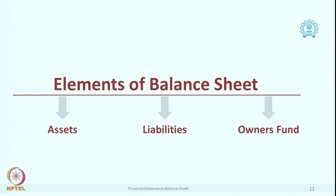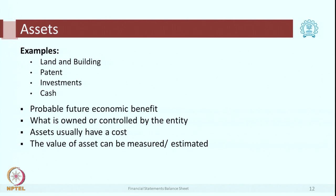In the format of balance sheet, if we look at the elements which we are going to discuss in detail now, there are 3 elements: one is assets, next is liabilities — here I mean external liabilities — followed by owners' funds. In the last session we had just started our discussion on assets, so we will start again from that. In assets, we are already seeing the major examples of assets.